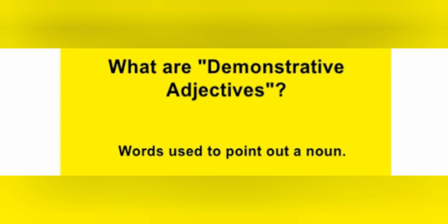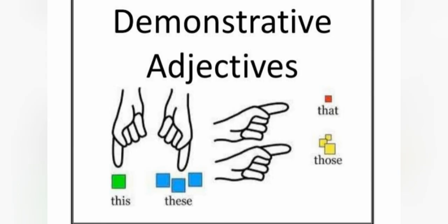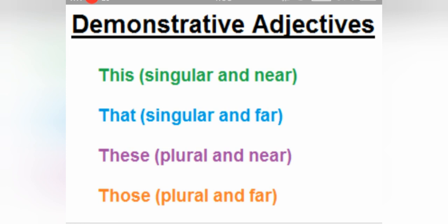Yeh bhi demonstrative pronoun se different hote hain — inmein bahut minor sa difference hota hai. Demonstrative pronouns jo hote hain, woh follow hote hain by noun or pronoun. Jo aapka demonstrative pronoun hai, jaisi ki 'this is my book' — yeh demonstrative pronoun hua. Whereas demonstrative adjective: 'this book is mine.' Yeh bilkul possessive adjective ki tarah hai — jaisi possessive adjective comes before a noun, usi tarah demonstrative adjective also comes before a noun. 'This book is mine' — yahan book aapka noun hai, aur demonstrative adjective kya hai? This.